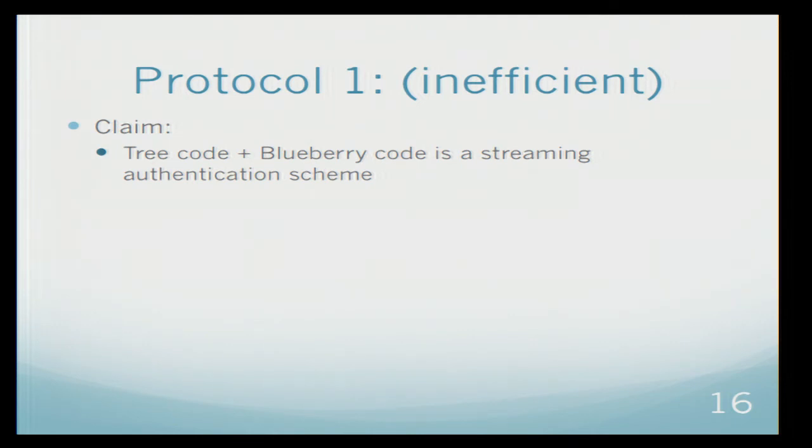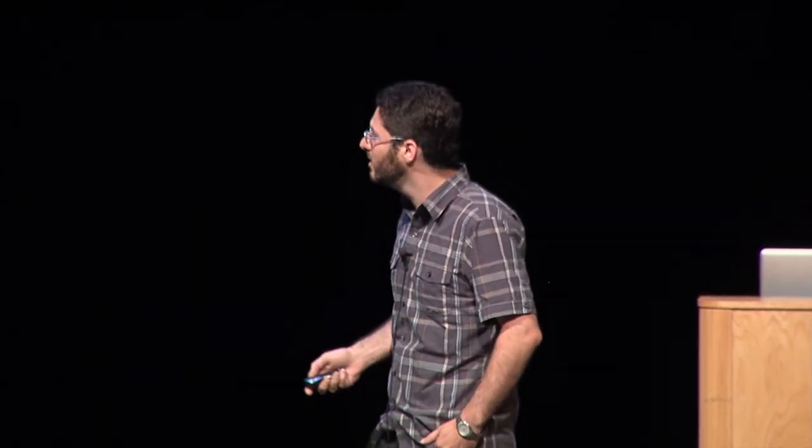Now the claim is that if we combine tree codes and blueberry code, we will get our authentication scheme. What do I mean by that? Alice, the encoding will look like that. If Alice has this string, first she will use a tree code and encode each bit as a label.